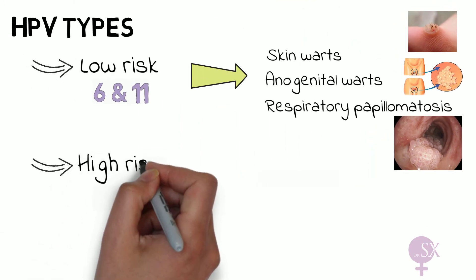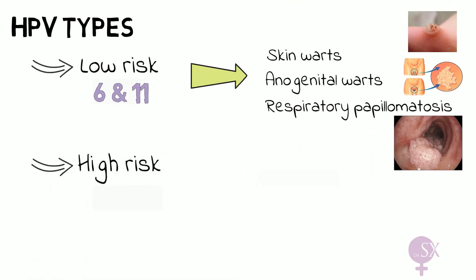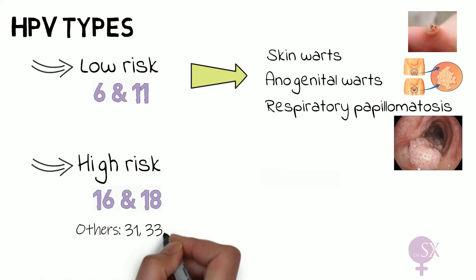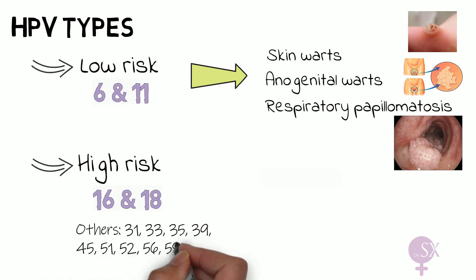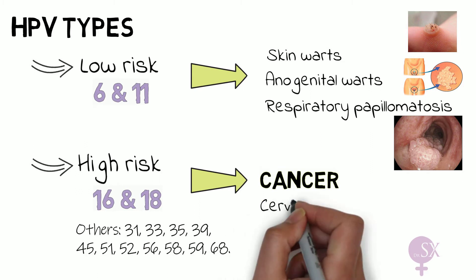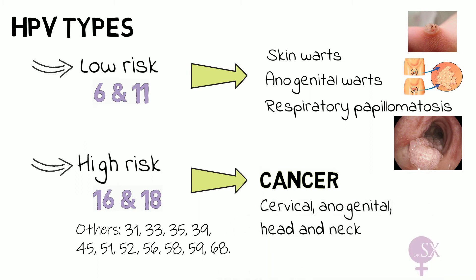Then we have the high-risk types. The most common are HPV 16 and 18, but others include 31, 33, 35, 39, 45, 51, 52, 56, 58, 59, and 68. These are more dangerous and may result in cancer, mainly of the cervix, anogenital region, and head and neck.